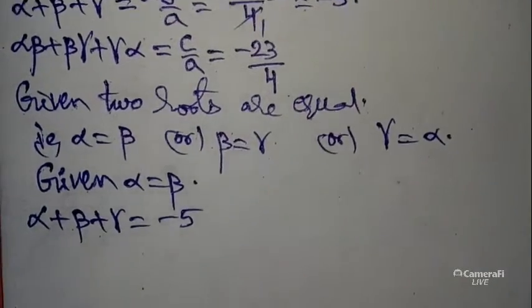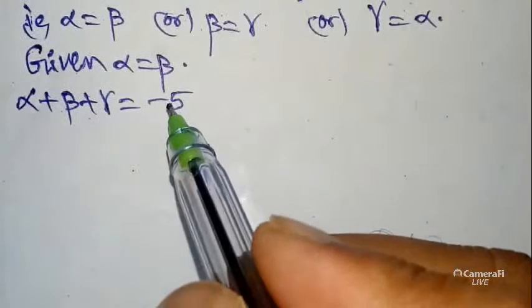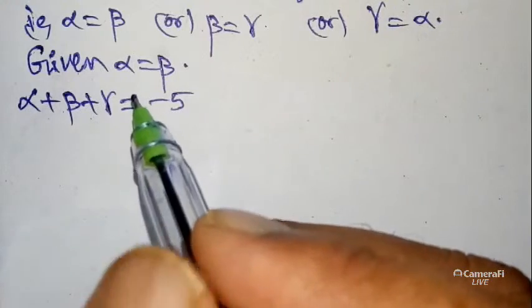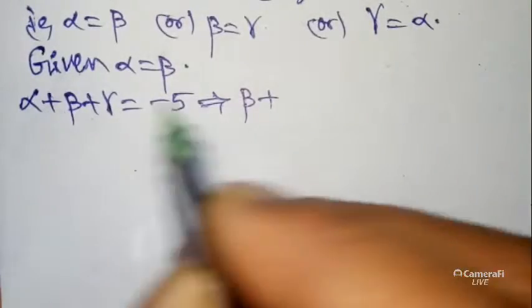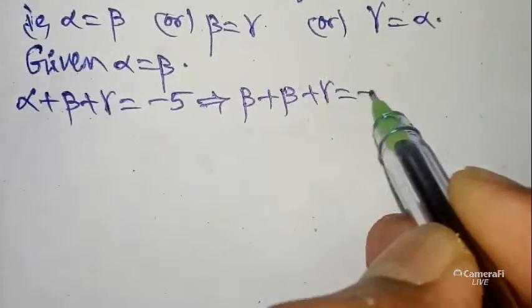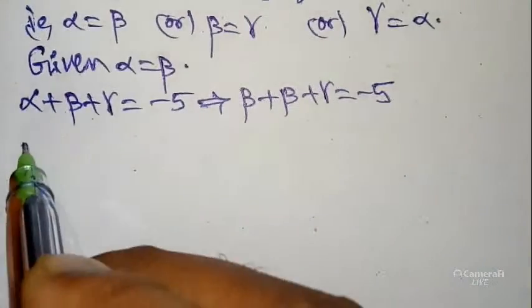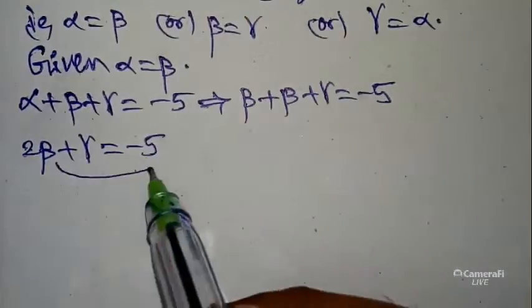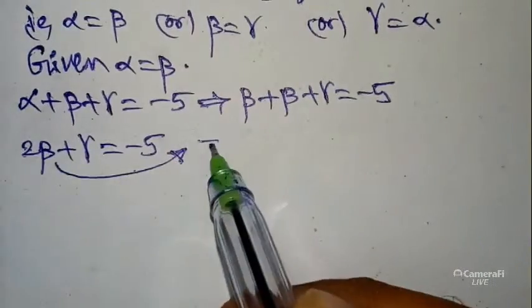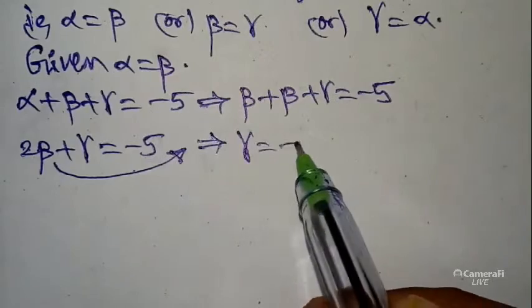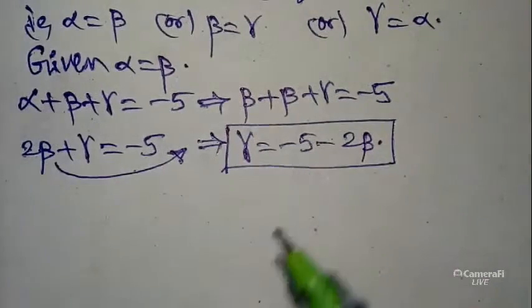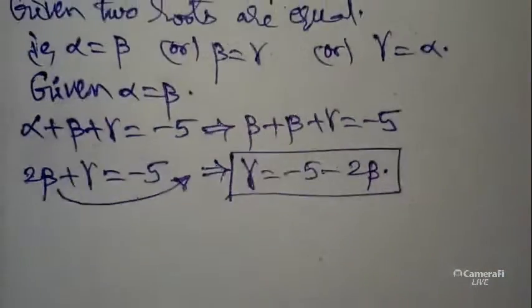From alpha + beta + gamma = -5, substitute alpha = beta: beta + beta + gamma = -5, so 2·beta + gamma = -5. Therefore gamma = -5 - 2·beta. Keep this in a box — we will use this gamma value later.